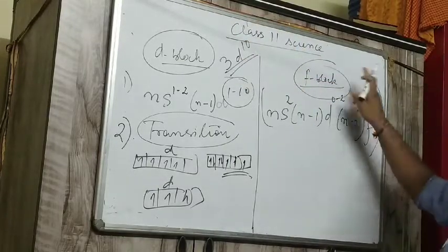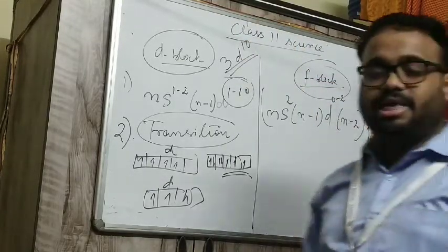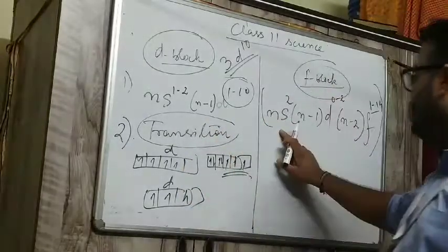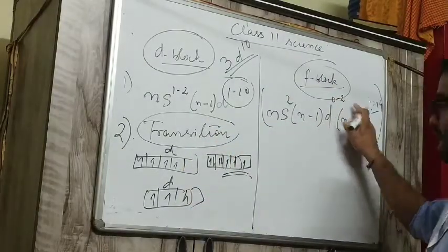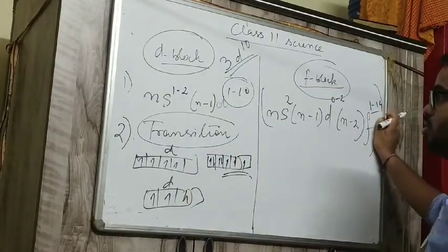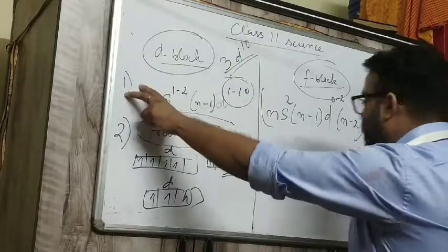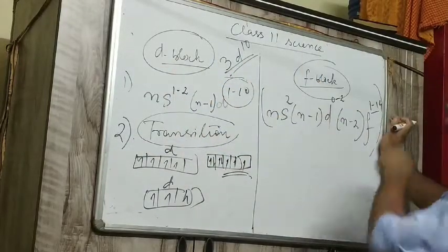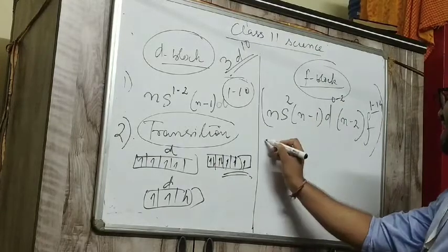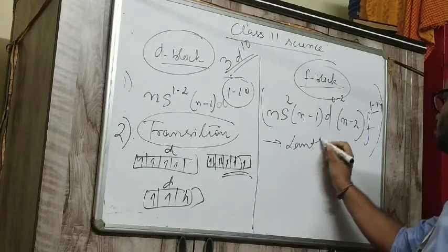So this is the general electronic configuration of f block. This is not required but still I have given you: ns two, n minus one d zero to two, n minus two f one to 14. So when you take d full, s will be limited, and when you take f full, d will be limited.